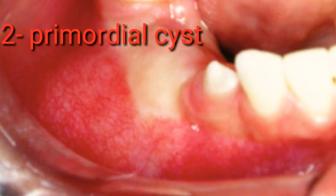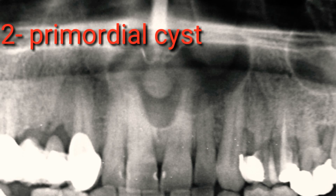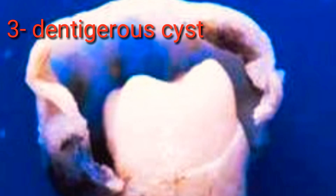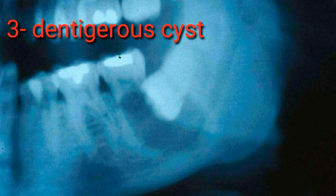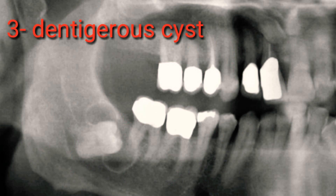Primordial cysts develop from the regression of the stellate reticulum in the enamel organ. Dentigerous cysts develop after deposition of enamel and are the probable result of degenerative changes in the reduced enamel-forming epithelium. The dentigerous cyst contains the crown of an unerupted tooth.